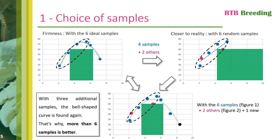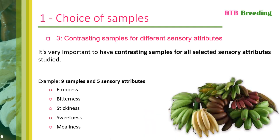Of course, what I've just shown is only a fictitious example, but it simply serves to illustrate the fact that the more samples you choose, the greater the chance that they will be different and will enable you to obtain a curve that represents the reality of preference and therefore correct thresholds.